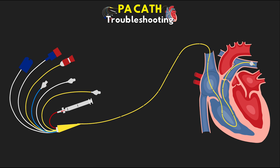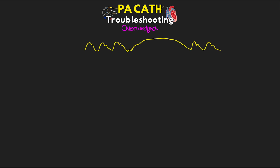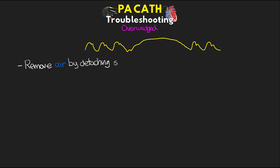Without further ado, let's dive right in. The first troubleshooting scenario is if we are over-wedged. I did discuss this in the lesson on abnormal waveforms, but I want to go over it again here so it's all consolidated. The first thing we need to do is remove air by detaching the syringe and then seeing the over-wedge waveform go back to a normal pulmonary artery waveform.